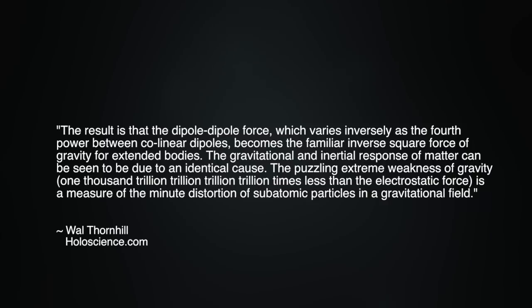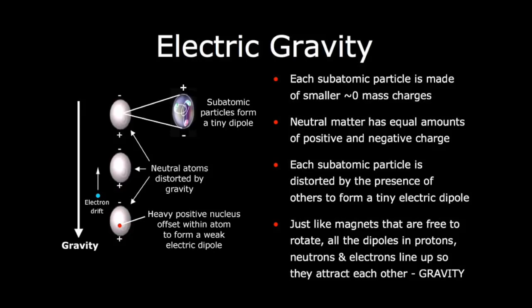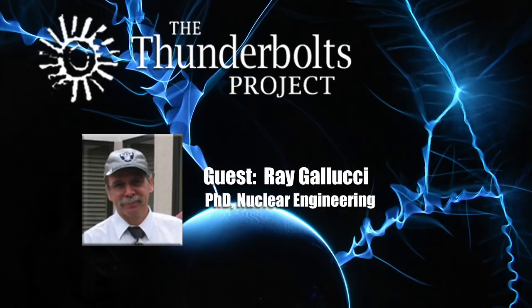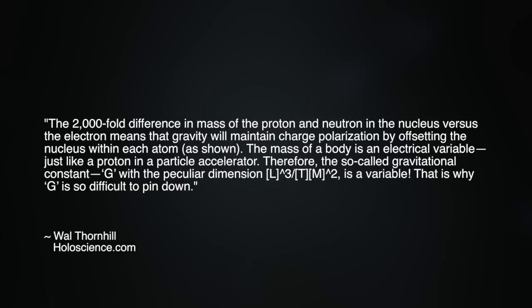The gravitational and inertial responsive matter can be seen to be due to an identical cause. The puzzling extreme weakness of gravity, and again you're talking about 10 to the 39th power with electromagnetism, is a measure of the minute distortion of subatomic particles in a gravitational field. There's that nice diagram on the website that shows the three atoms in a vertical line and the slight off-center of the charges of the protons and electrons, which EU theory alleges may be what gives rise to gravitation.